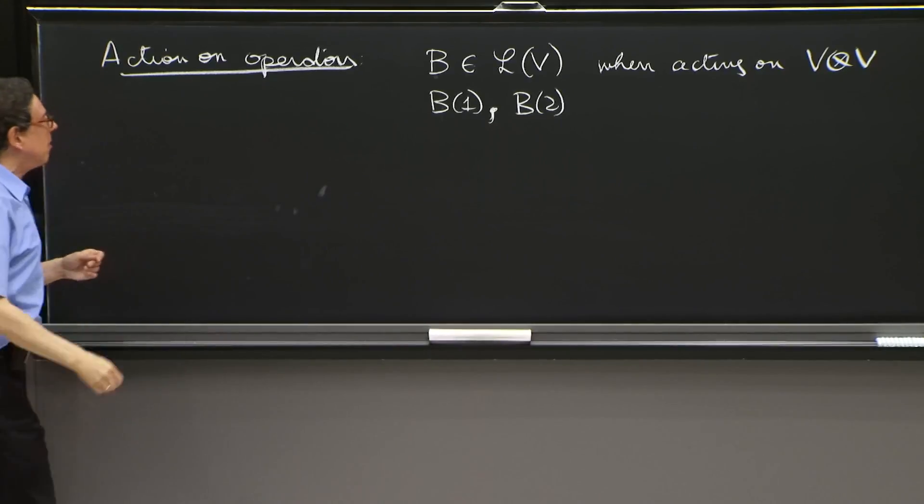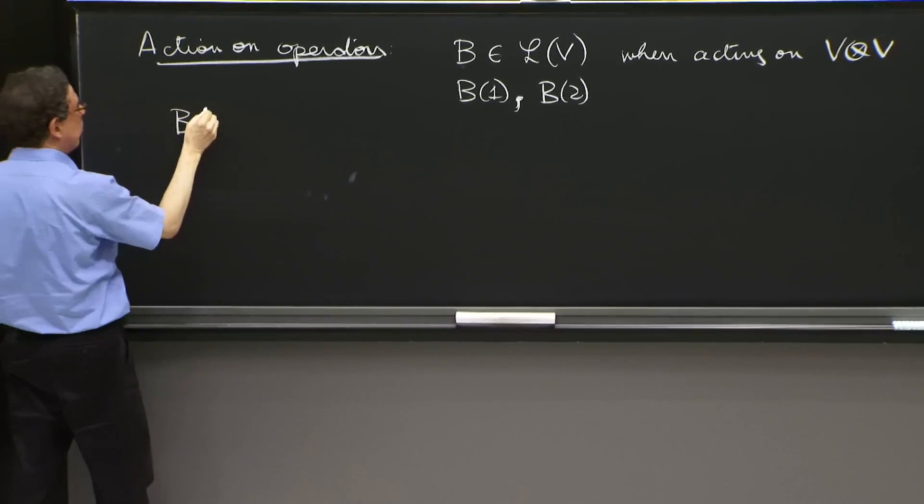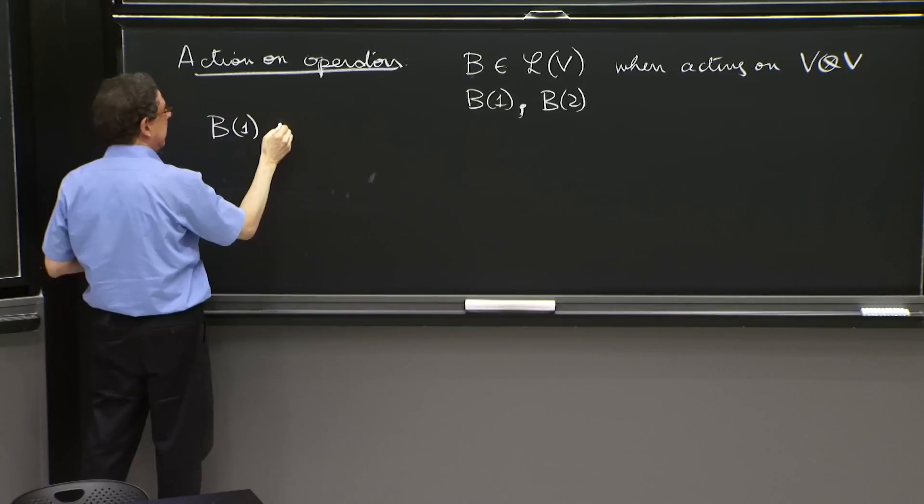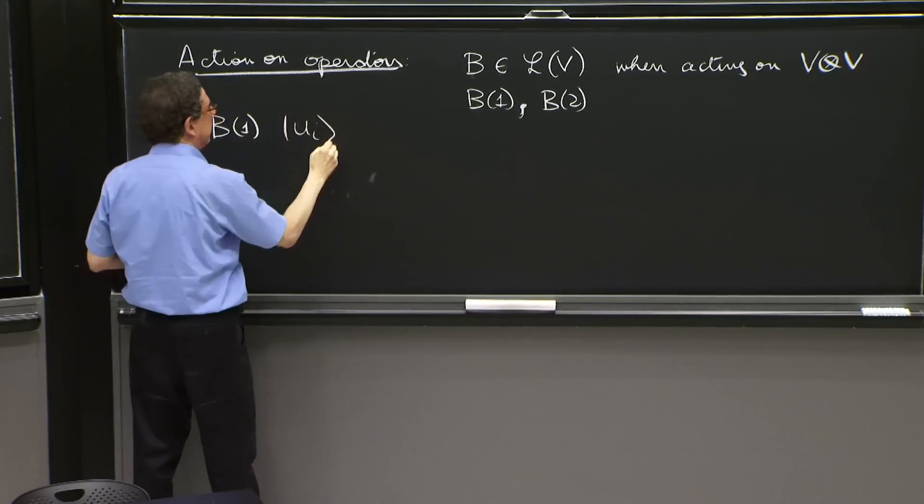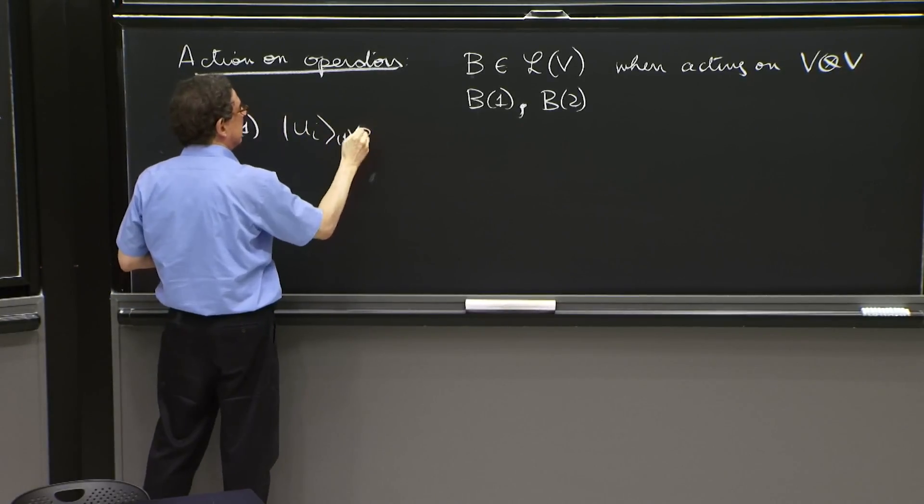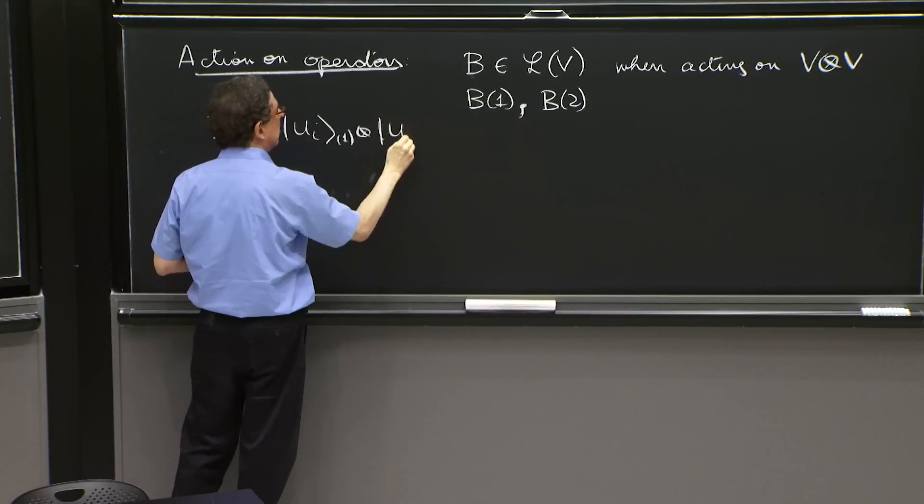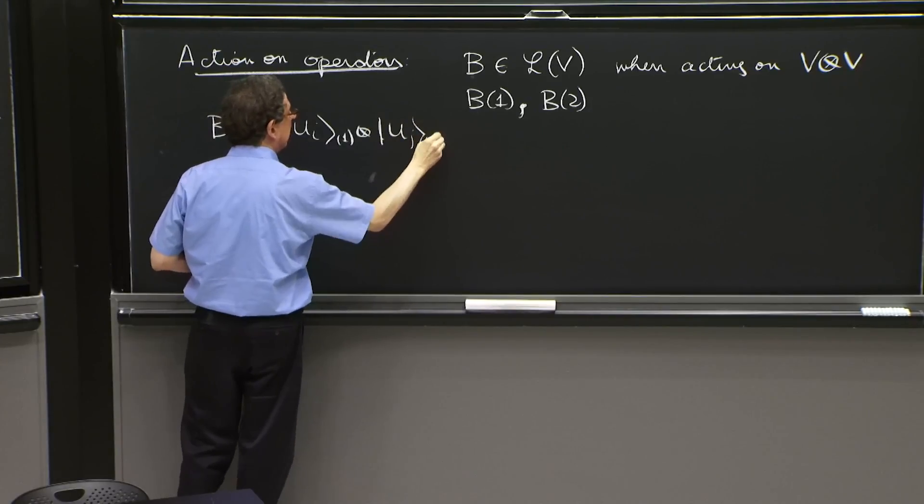And you define them in an obvious way, like B1 acting on Ui1 tensor Uj2.